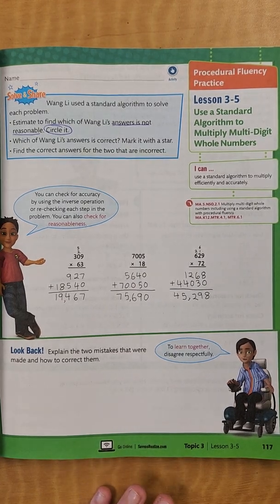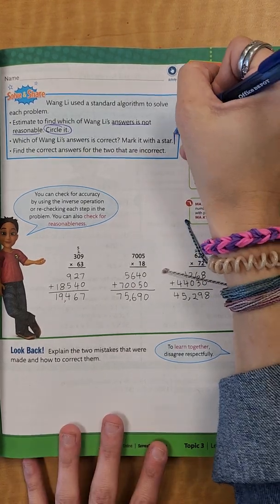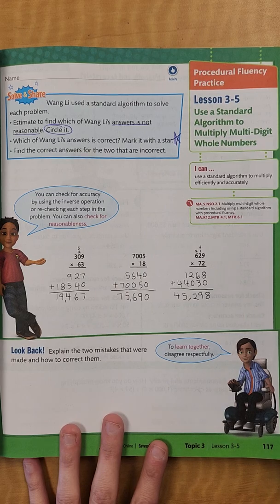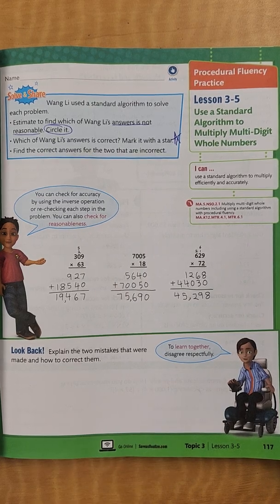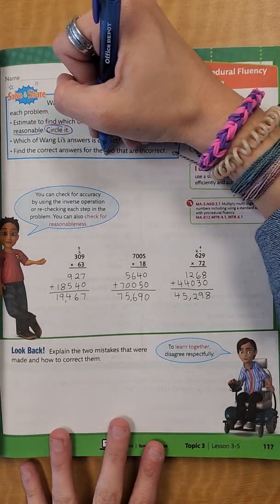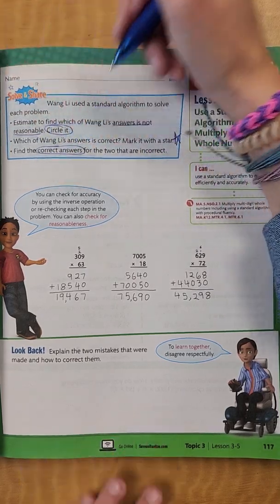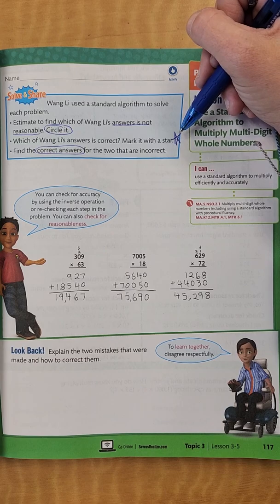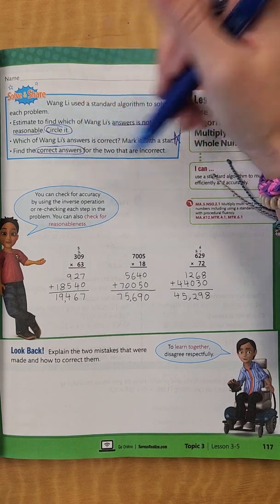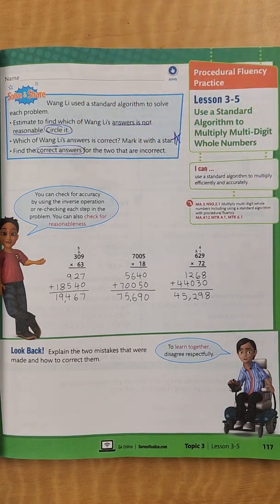Which of Wang Li's answers is correct? Mark it with a star. Find the correct answers for the two that are incorrect. So we're finding the ones that are wrong, starring the one that would be correct, and we're going to find the correct answers for the two that are incorrect.